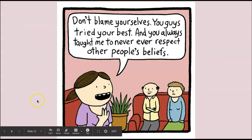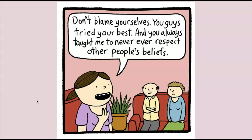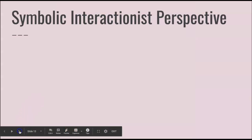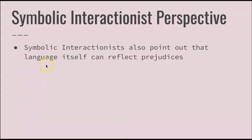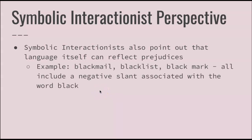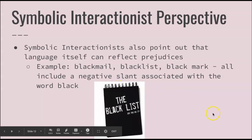There is a political cartoon to reinforce Allport's ideas about learning how to discriminate and develop prejudiced attitudes. Symbolic interactionists also point out that language itself can reflect prejudices — for example, the use of the word 'black' in blackmail, blacklist, and black mark all include a negative slant associated with the word black.